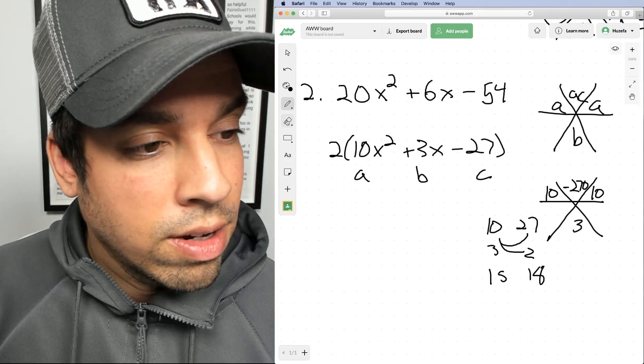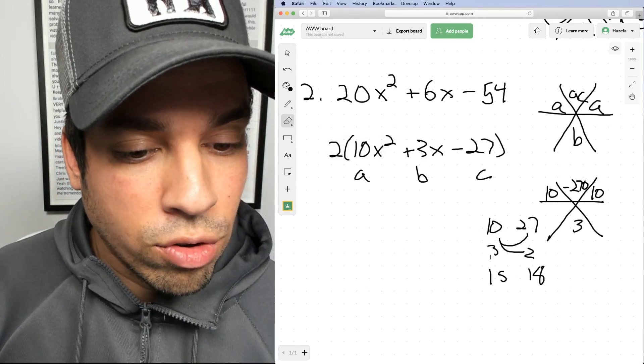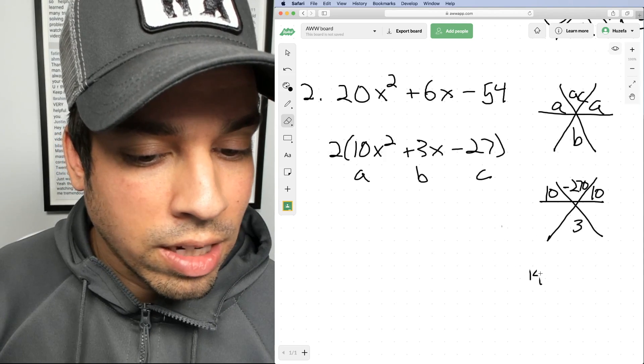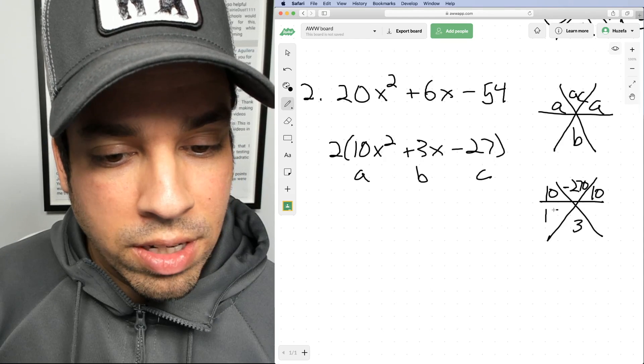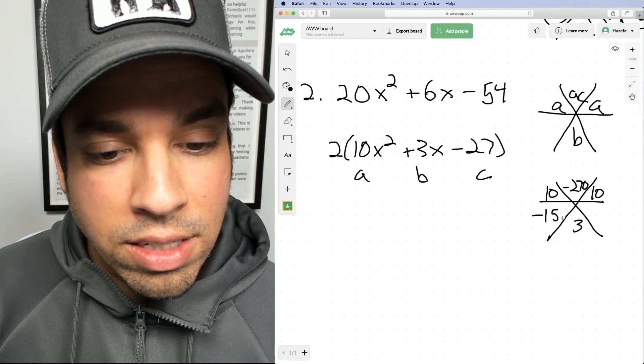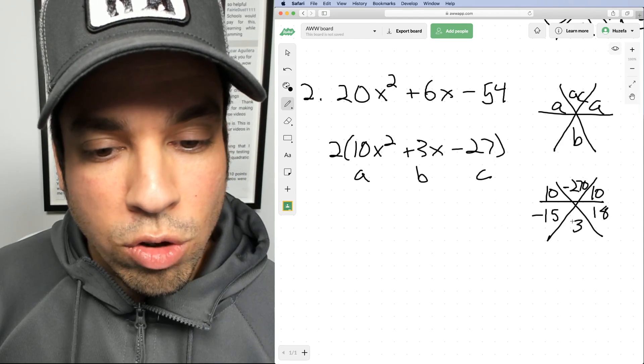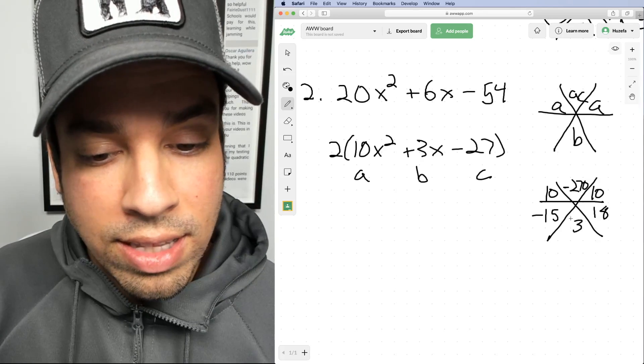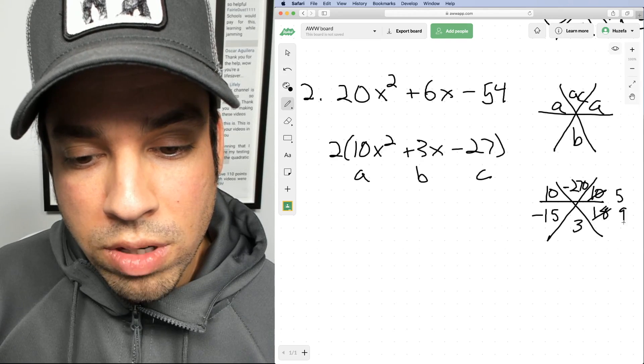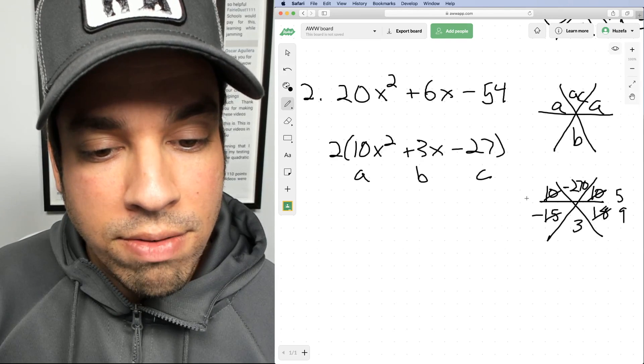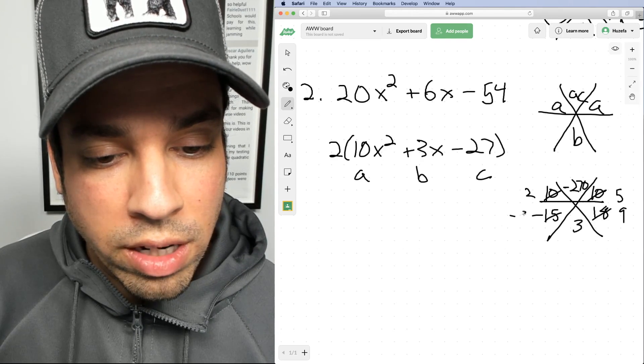Now I've got 15 and 18 and they're three apart. And that's exactly what I want because one's going to be negative, one's going to be positive. So I've got 15 negative and positive 18. Those two multiply to negative 270 and they add to positive three. Now let's reduce these like fractions. Divide these by two. That's five over nine. Divide these by five, and I've got two over negative three.